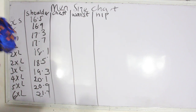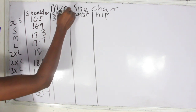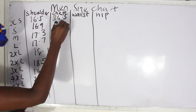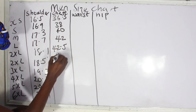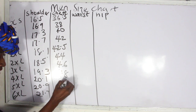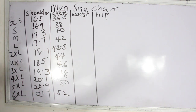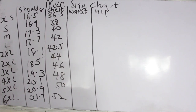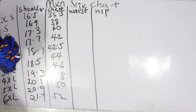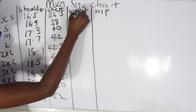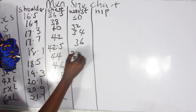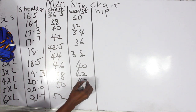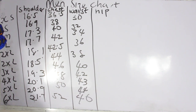The male chest measurements are: extra small — 36.5 inches, small — 38, medium — 40, large — 42, XL — 42.5, 2XL — 44, 3XL — 46, 4XL — 48, 5XL — 50, 6XL — 52 — adding approximately 2 inches each time. Waist measurements: extra small — 30, small — 32, medium — 34, large — 36, XL — 38, 2XL — 40, 3XL — 42, 4XL — 43, 5XL — 44, 6XL — 46 inches.